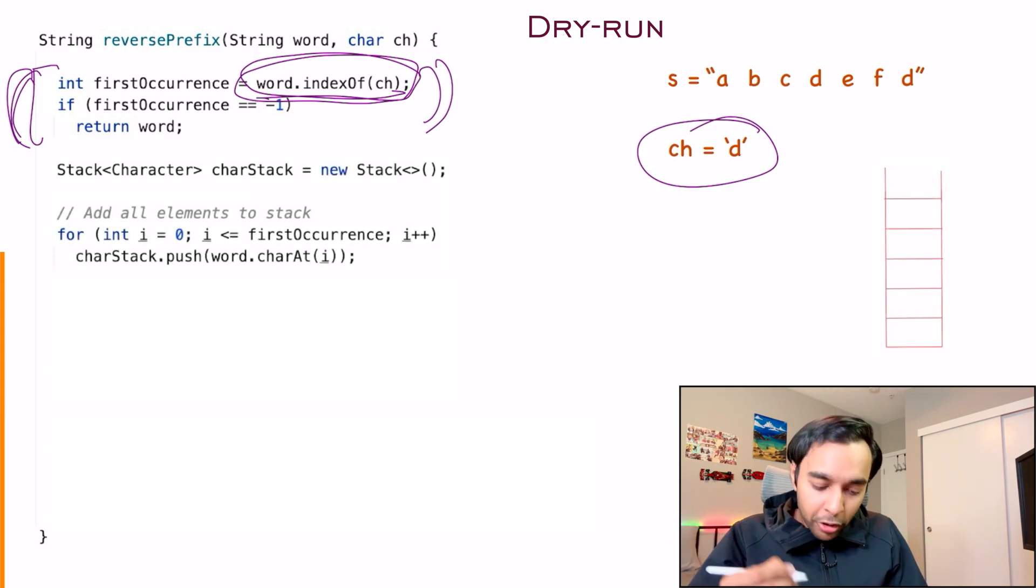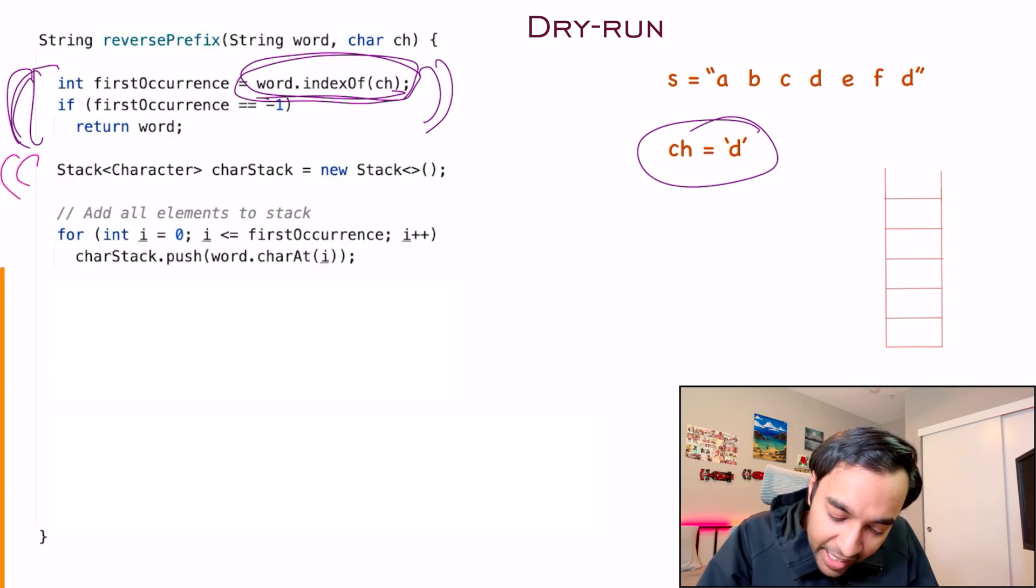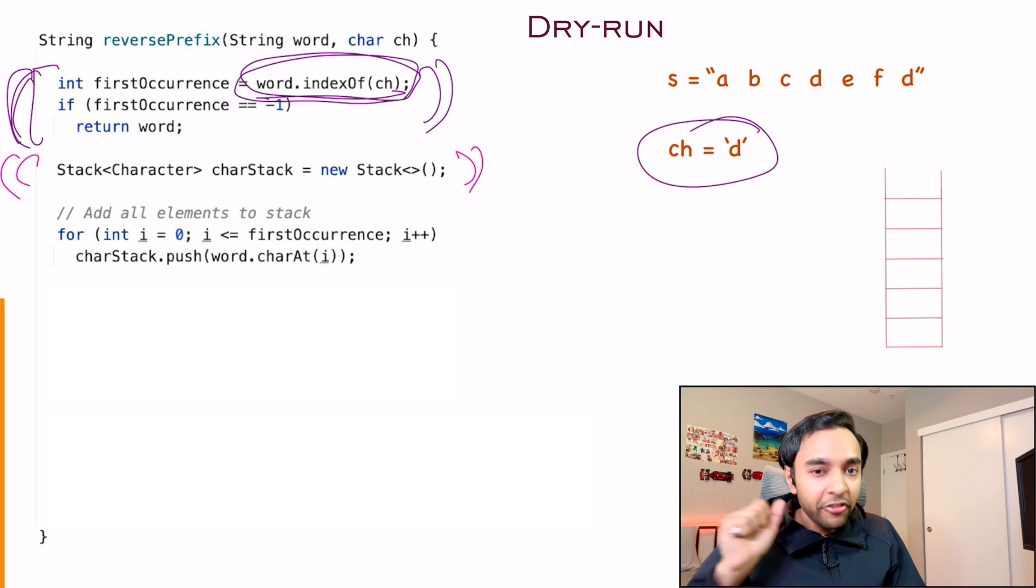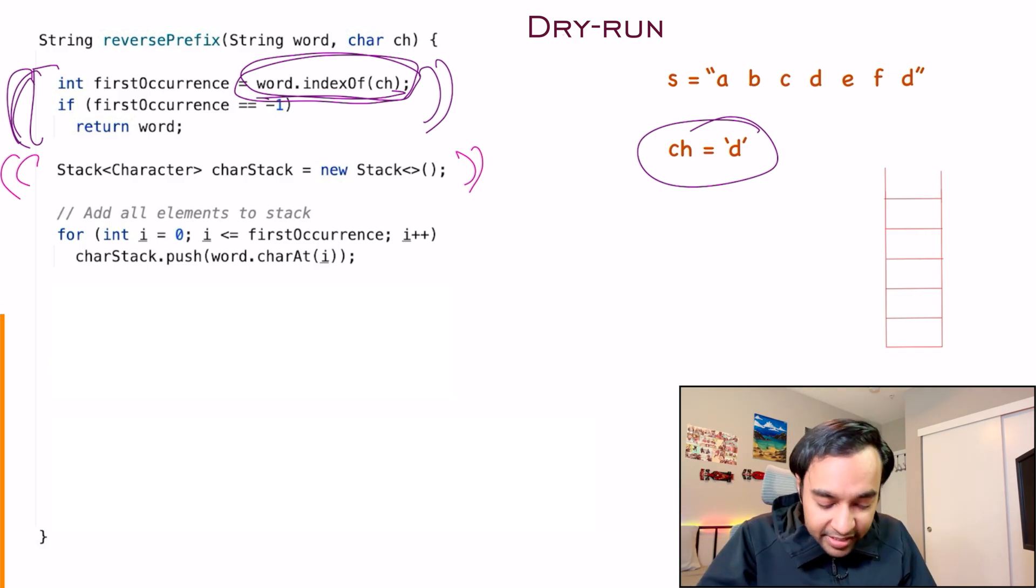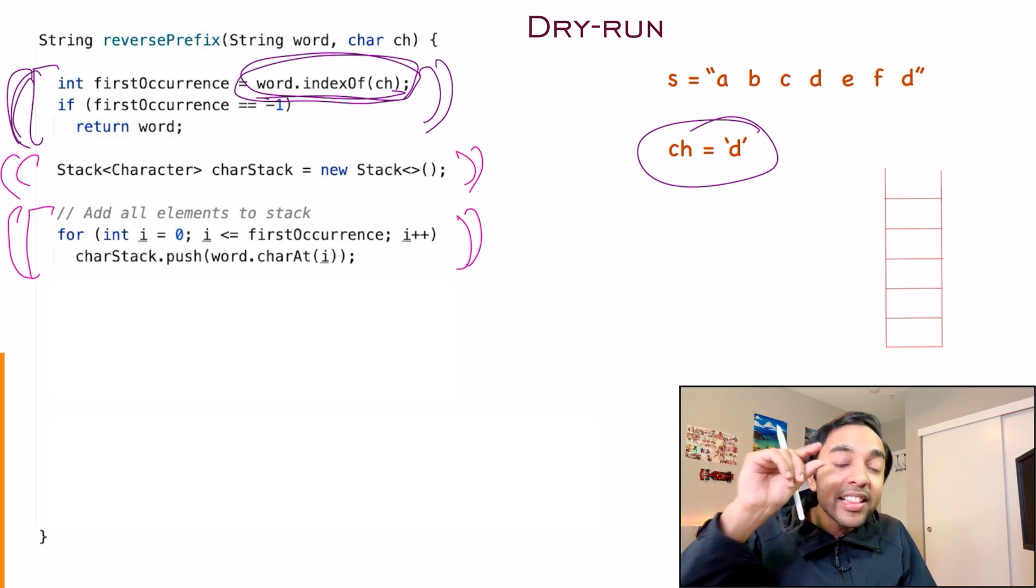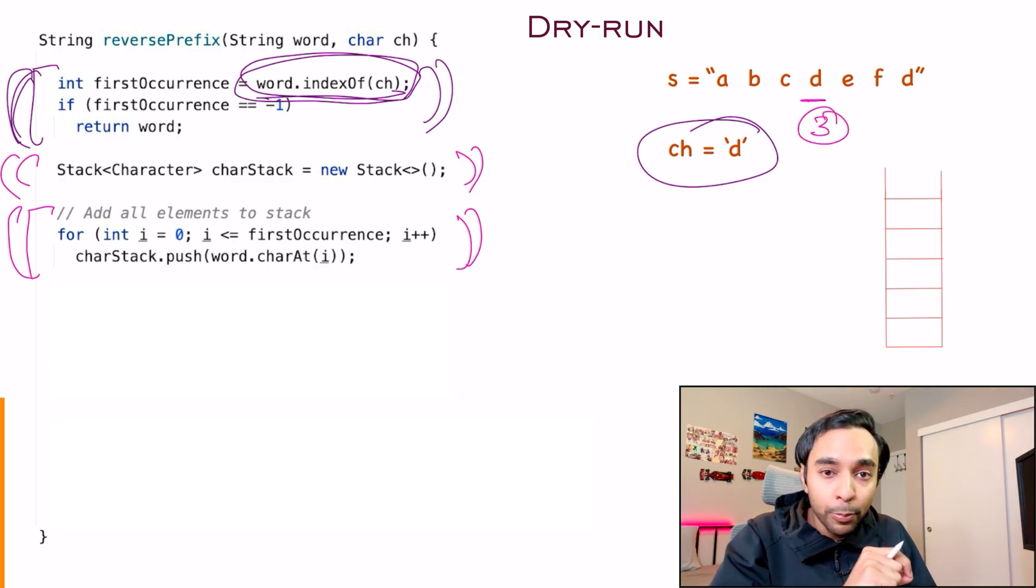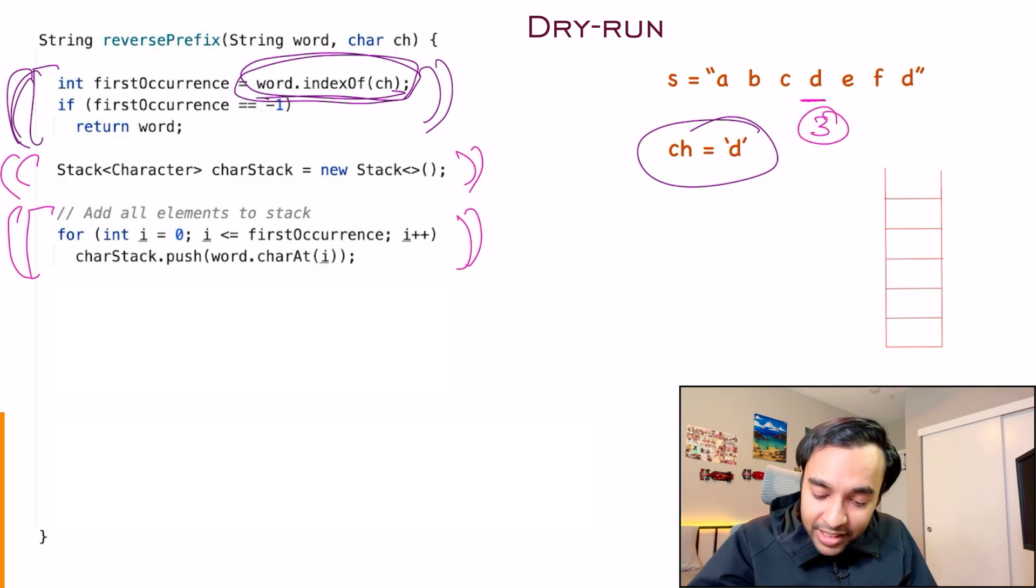For the next step, what do you do? You now create a character stack that is going to store all of the characters up till the first occurrence. Once the stack is ready, we now add all of the characters to our stack until that first occurrence. I get the value of my first occurrence as 3, given zero-based indexing. So, in this loop, I will start to add the characters A, B, C, and then a D. The characters got added and now is the time that you actually start building your result.